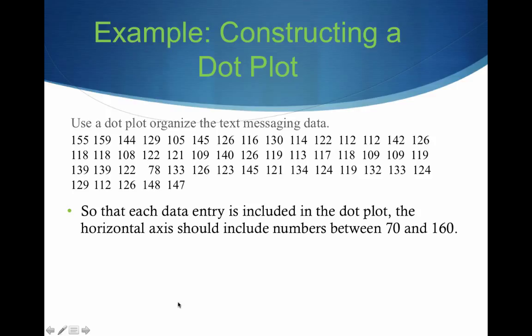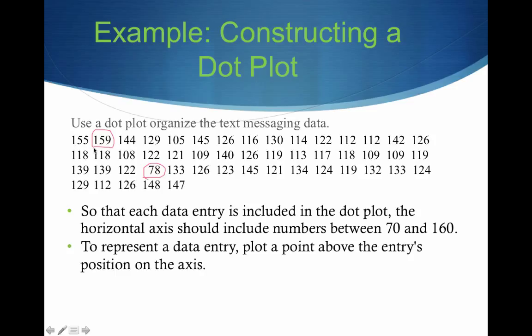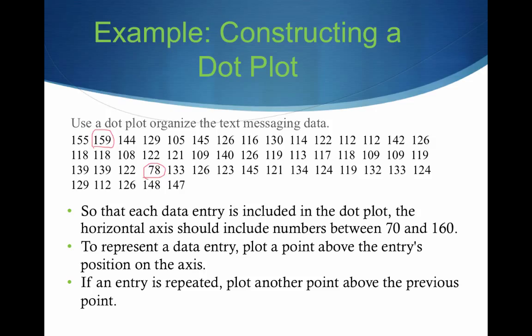All right, let's go back to our text messaging data and try to construct a dot plot with it. So that each data entry is included in the dot plot, the horizontal axis should include numbers between 70 and 160. Well, why the heck is that? Well, recall our smallest number is 78, and our largest number is 159. So by using 70 to 160, we're going to capture all of our data. And to represent a data entry, all we do is we plot a point above the entry's position on the axis. If an entry is repeated, we plot another point above the previous point.